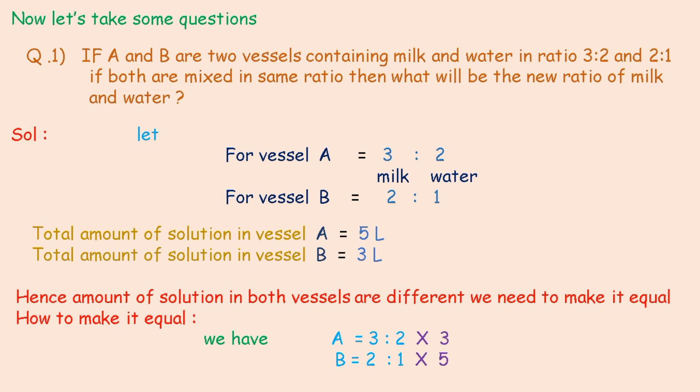And we have multiplied B by 5 because total amount of solution in vessel A is 5 liters. Hence, we will have A is equal to 9 ratio 6, and B is equal to 10 ratio 5.